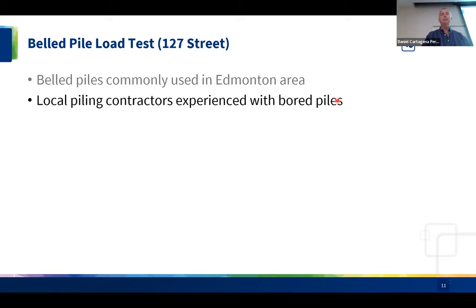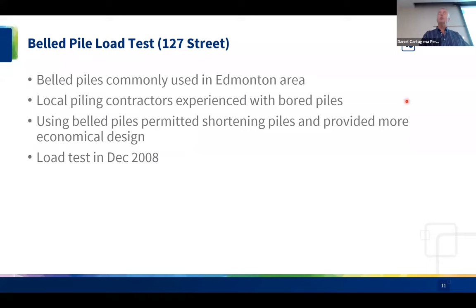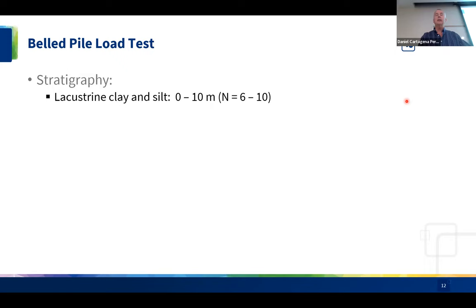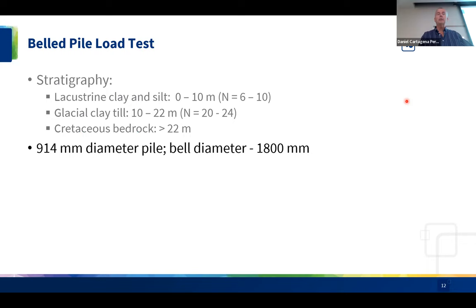This part of the world is very conducive to cast-in-place concrete piles. Local piling contractors have many decades of experience with bored piles, making it a very successful and economical pile type. The bell pile load test was conducted in December 2008. The stratigraphy at the site comprised lacustrine silt and clay in the upper 10 meters, underlain by glacial till from 10 to 22 meters with blow counts of 20 to 24, and Cretaceous bedrock — clay shale and sandstone — beyond 22 meters.